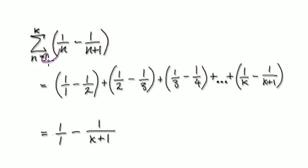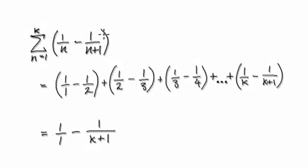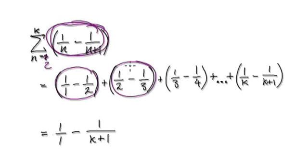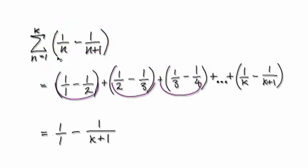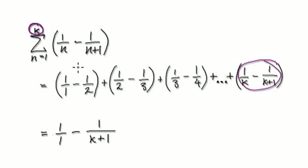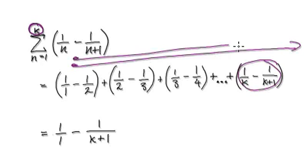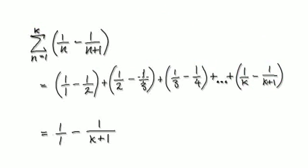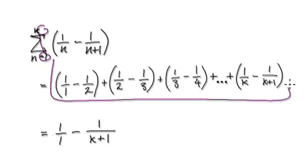So when n equals 1, put it into here — this thing here will be a half. When n equals 1, this whole thing here will give you this. When n equals 2, this whole thing here will be this. When n equals 3, this whole thing here will be this. The very last term will be our arbitrary term k. We are summing up from 1 to k, and then later on we take the limit as k tends to infinity.